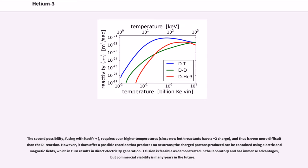The second possibility, fusing He3 with itself, requires even higher temperatures, since now both reactants have a +2 charge, and thus is even more difficult than the D-He3 reaction. However, it does offer a possible reaction that produces no neutrons. The charged protons produced can be contained using electric and magnetic fields, which in turn results in direct electricity generation. He3-He3 fusion is feasible as demonstrated in the laboratory and has immense advantages, but commercial viability is many years in the future.